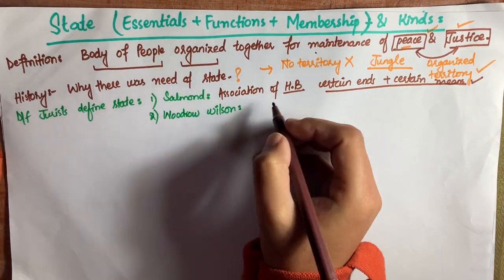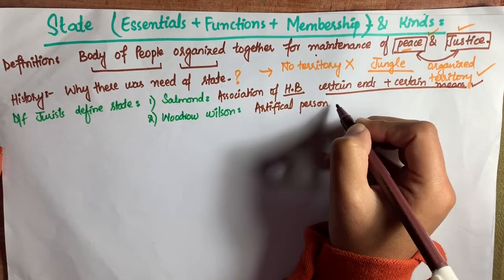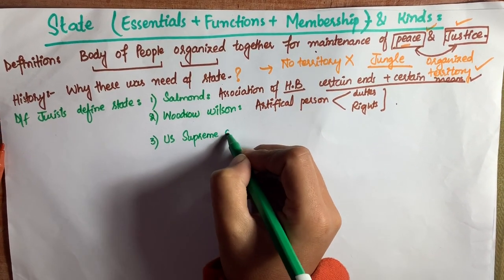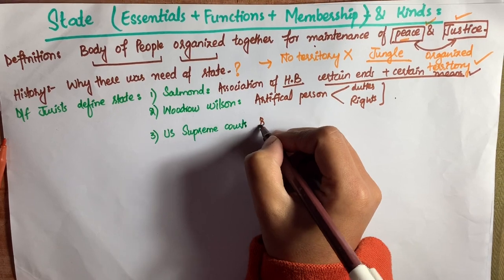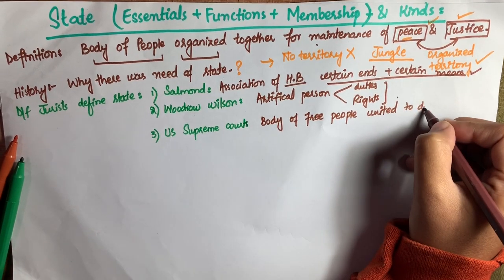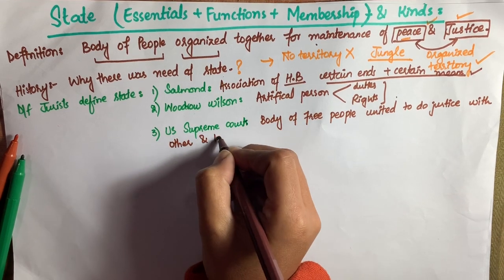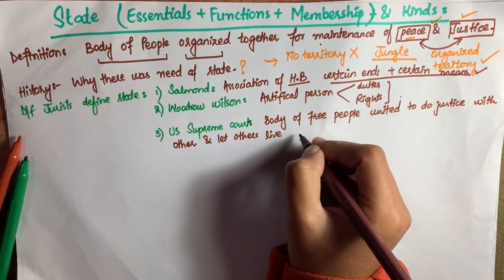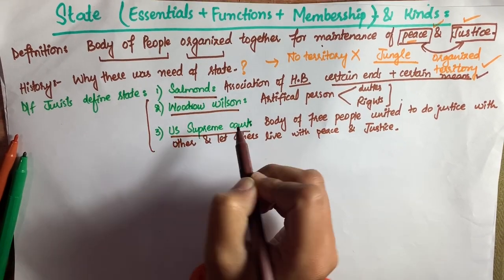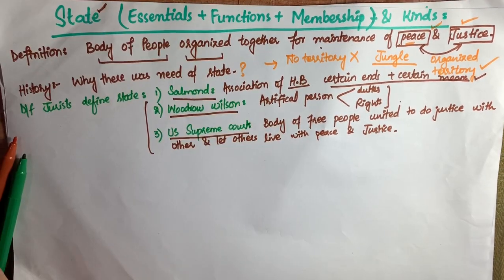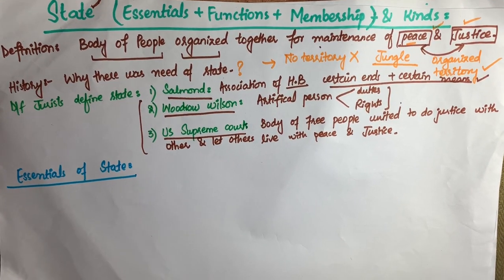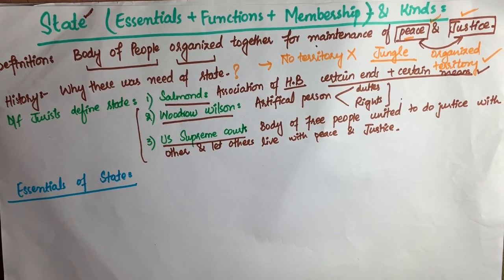Woodrow Wilson defines state as a chief artificial person having certain rights and duties. The US Supreme Court defines the state as a body of free people united together to enjoy peacefully what is their own, to do justice to others, and to let other people enjoy their own rights with peace and justice.